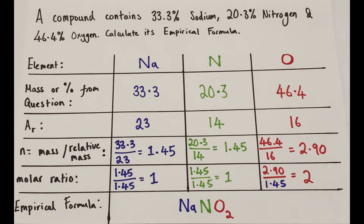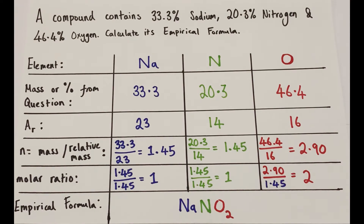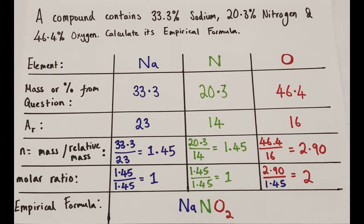Ar values are written directly from the periodic table. Dividing each percentage by the relative atomic mass gives the number of moles. If the result is a long decimal, give it to three significant figures. The smallest mole value is 1.45, so divide all mole values by 1.45. The molar ratio comes out as 1, 1, and 2. Presented as a formula, the empirical formula is NaNO2. The grid method works every single time.